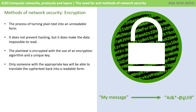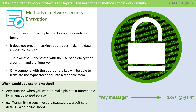The next method of network security is encryption. This is simply the process of turning plain text into something which is unreadable. This doesn't actually prevent hacking, but it does make the data impossible to read if you have been hacked. The plain text is encrypted with the use of an encryption algorithm and a unique key, and only someone with the appropriate key will be able to translate the information back into its original readable form. We use encryption whenever you want to make plain text unreadable by an unauthorised source — typically for the transmission of sensitive data, such as passwords or credit card details typed into an online shop.